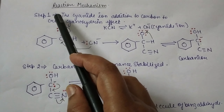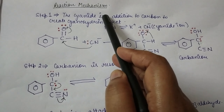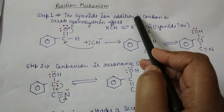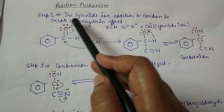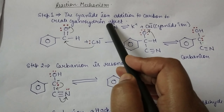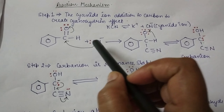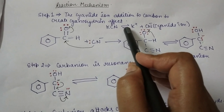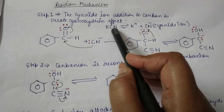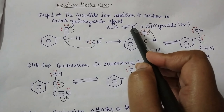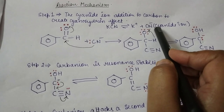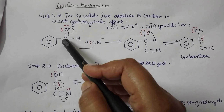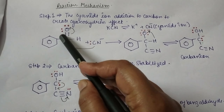Benzoin condensation is a suitable method for the conversion of aromatic aldehyde, and cyanide ion acts as a catalyst. Cyanide ion is a strong nucleophile which also acts as a good leaving group. The benzoin condensation reaction proceeds by nucleophilic substitution reaction followed by a rearrangement reaction.